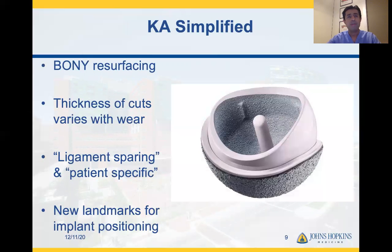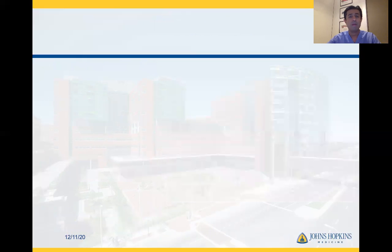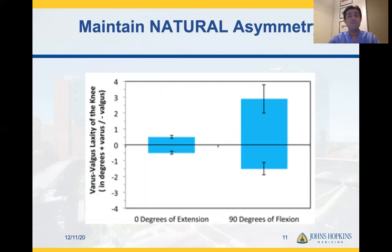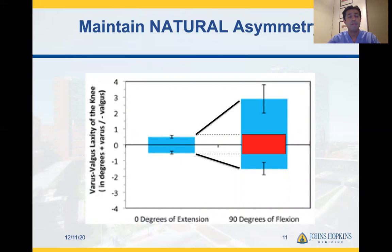In modern terms, it's important to make an analogy to hip resurfacings. Kinematically aligned knees, just like hip resurfacings, are a bony resurfacing procedure in which the thickness of the cuts that you make varies with the wear you see in various different compartments. It's a ligament-sparing and patient-specific procedure, and there are new landmarks for implant positioning. These landmarks include various kinematic axes: in green is the transverse axis through the femur for tibial flexion and extension; in purple is the transverse axis for patellar flexion and extension; and in yellow is the longitudinal axis for tibial rotation in relation to the femur. The goal of kinematic alignment is to maintain the natural asymmetry that exists between extension and flexion in normal knees, as compared to a more mechanically aligned model in which you want equal flexion and extension gaps.